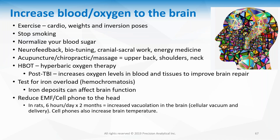Also reduce EMF and cell phone exposure. In rat studies, six hours a day for two months of a cell phone in talk mode increased cellular activity and brain temperature — not a good thing. Whenever you negatively affect oxygenation, blood flow, or brain temperature, you could affect the hypothalamus, pituitary, and hippocampus and downstream cortisol production. I realize it was a rat study, but it's also possible in humans.